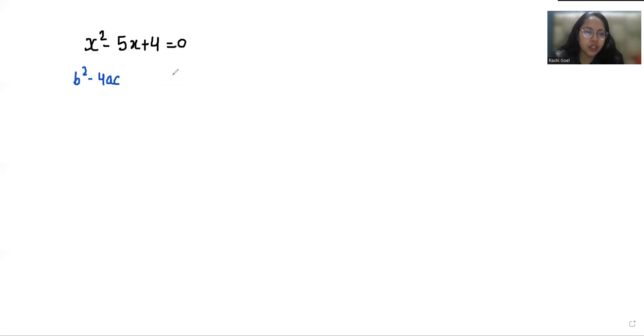So b square minus 4ac, where a is coefficient of x square, b is coefficient of x, and c is the constant. So negative 5 square minus 4 times 1 times 4. So 25 minus 16, that is 9. So it's greater than 0, that means two different real roots exist.